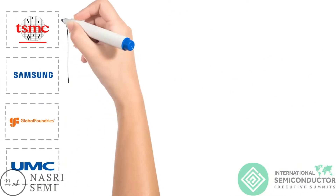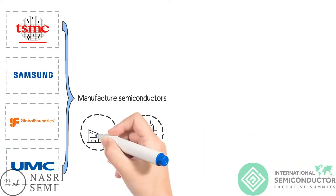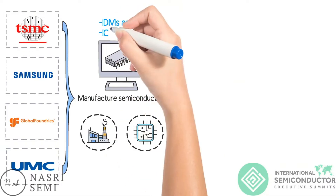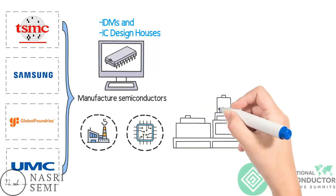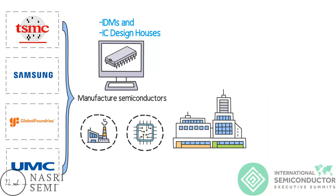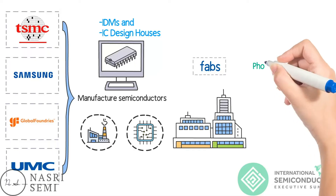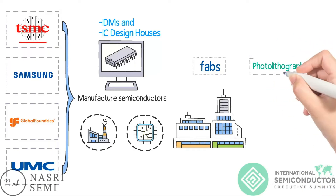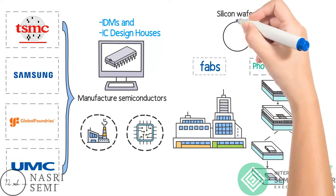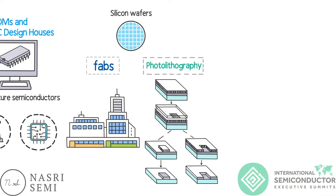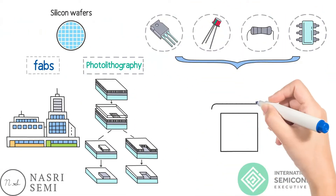Semiconductor foundries are companies that manufacture semiconductors using the designs provided by the IDMs and IC Design Houses. They have specialized facilities called Fabrication Plants, otherwise known as FABs, that use a process called photolithography to etch patterns onto silicon wafers, creating the individual transistors and all other components that make up a semiconductor.